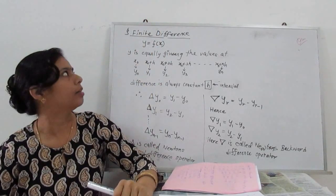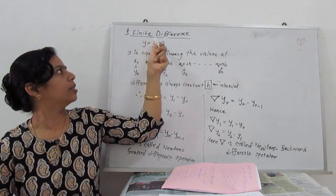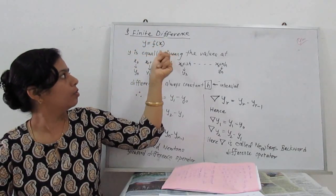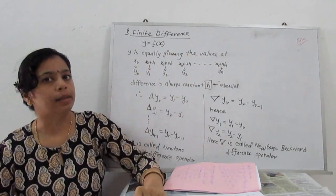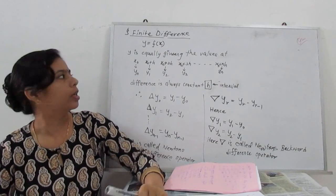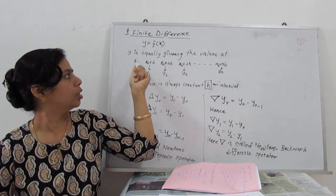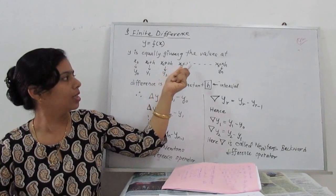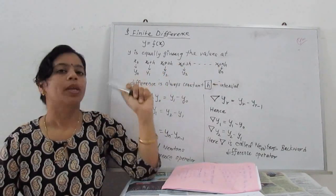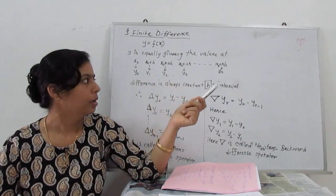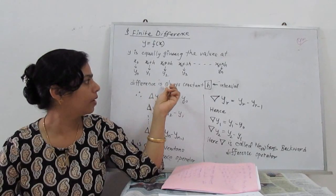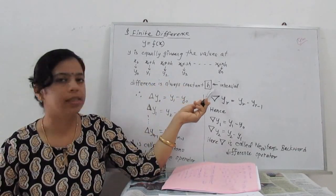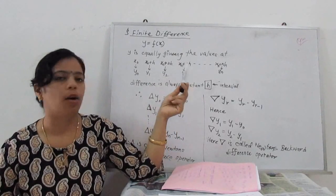What is the finite difference? If y is a function of one variable x, that is y = f(x), and y gives values at points x which are equally distributed — if the first point is x0, then x0+h, x0+2h, x0+3h, up to x0+nh — then the values of y are given by y0, y1, y2, y3, ..., yn. The difference between consecutive points is always constant, equal to h. So h is called the interval of these points.